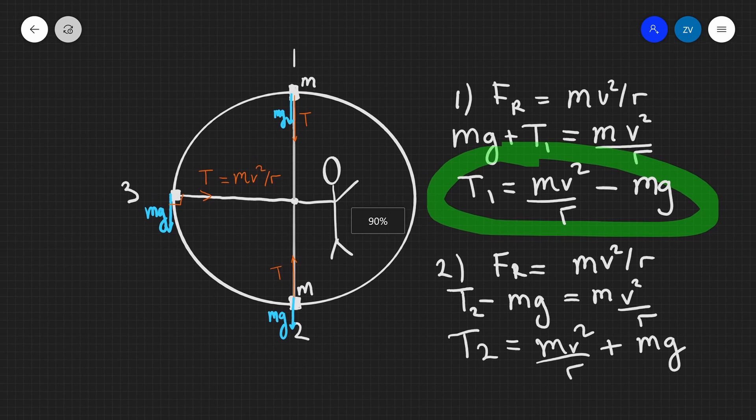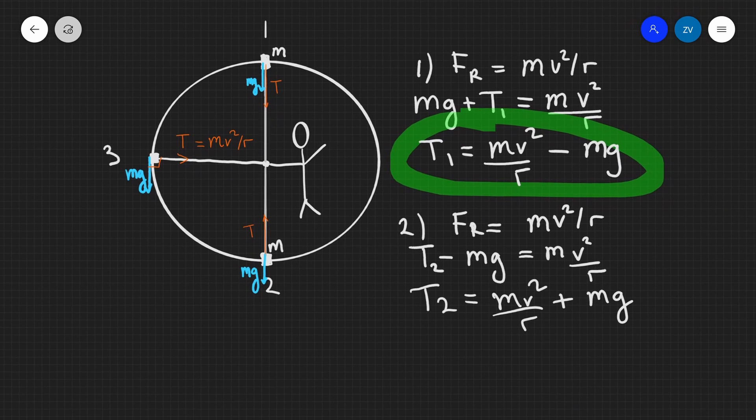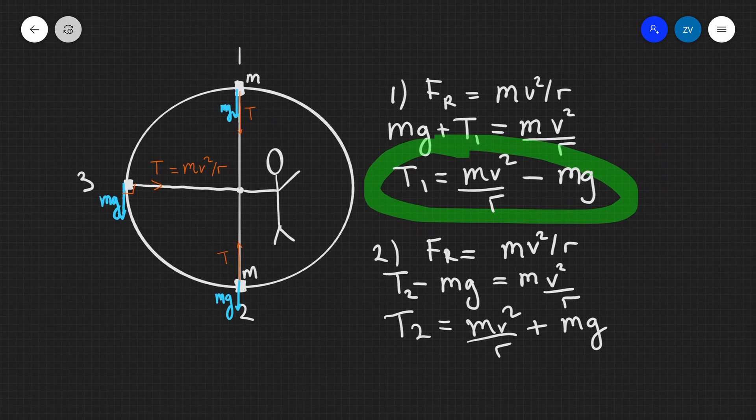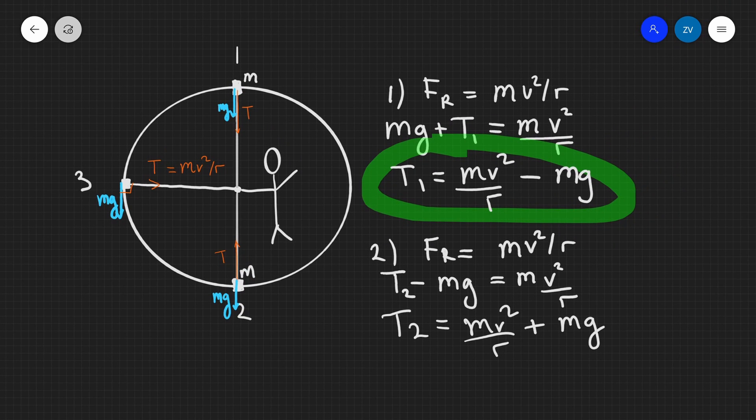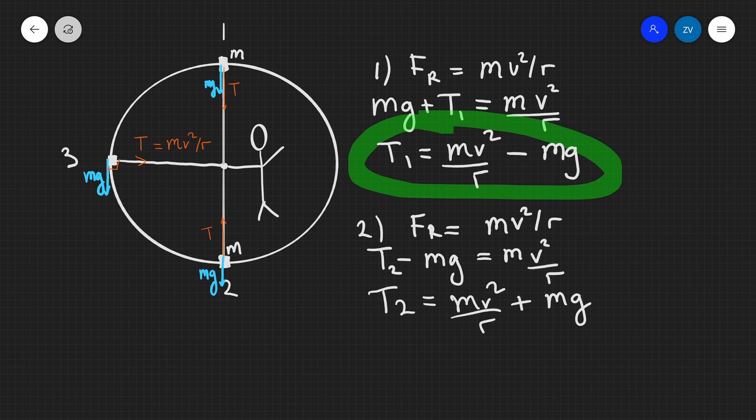Okay folks, so this is our tension in those three positions. Remember, the tension is always smallest at the top of the trajectory and always greatest at the bottom of the trajectory. We have our equations for T1 and T2 that you need to be able to derive pretty quickly in an exam situation. Hopefully this makes sense. If there are any questions, please feel free to drop a comment down below and please consider subscribing.